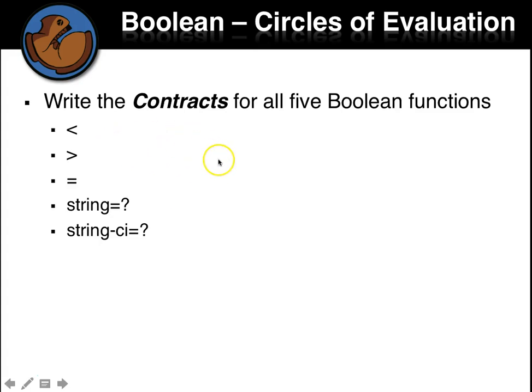So now, in the back of your book, you remember you have a lot of blank places for contracts. So pause now and write the contracts for all five of these Boolean functions. Less than, greater than, equals. String equal question mark. And string CI equal question mark. So pause right now and write the contracts for all of those.